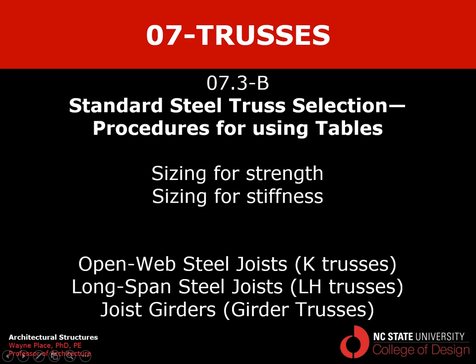That concludes our introduction to the procedures for using the standard steel truss tables. We addressed strength — the ability to resist the full factored load — and sizing for stiffness. Note that girder trusses are typically deep enough that they're not controlled by deflection, so we go straight from the factored force they must resist. We dealt with K trusses, LH trusses, and girder trusses. We didn't go through an example yet; this was an overview to introduce what tables exist and their general nature. Next, we'll do a worked example to fully understand how they're used.